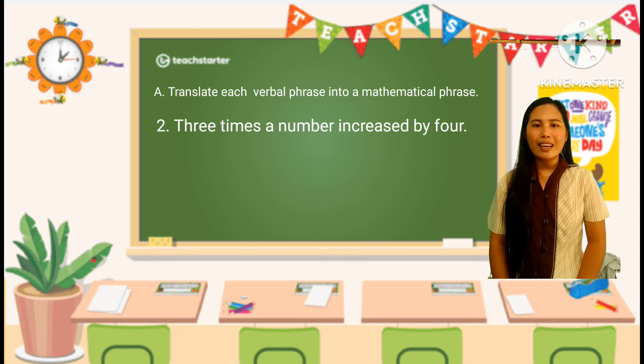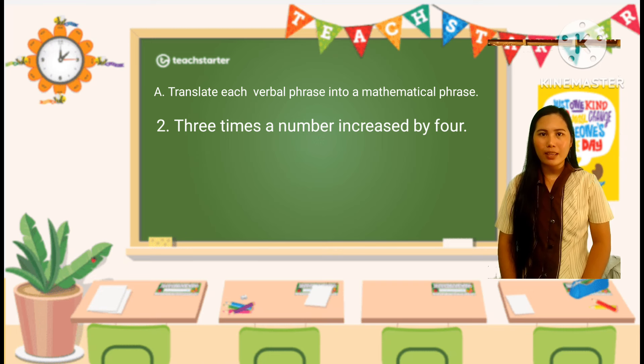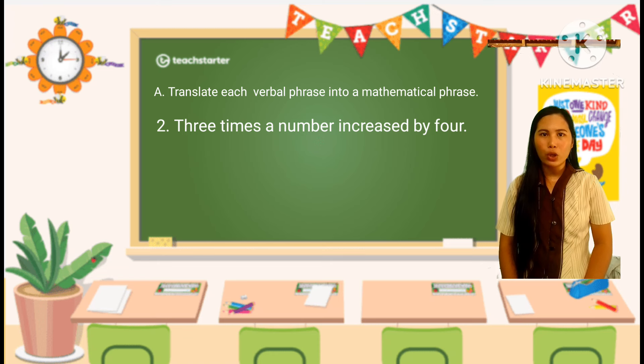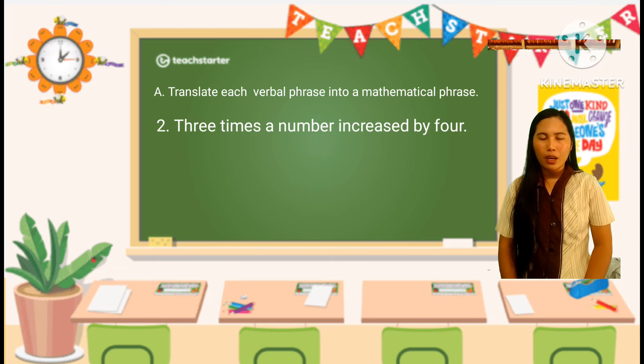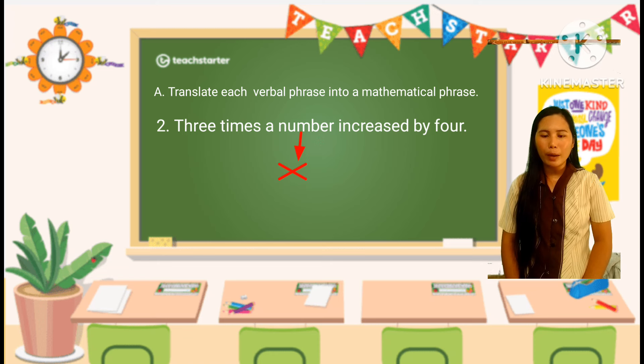The second example: to convert the verbal phrase, three times a number increased by 4, into a mathematical expression, you can follow the steps. First, identify a variable. Let's call the number in equation x. This variable represents the unknown number that we are working with.